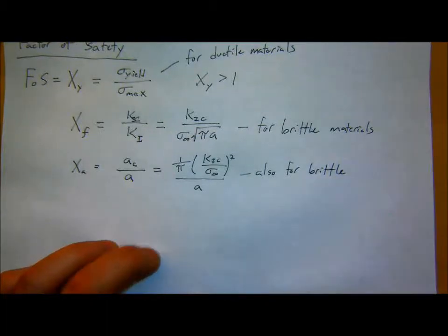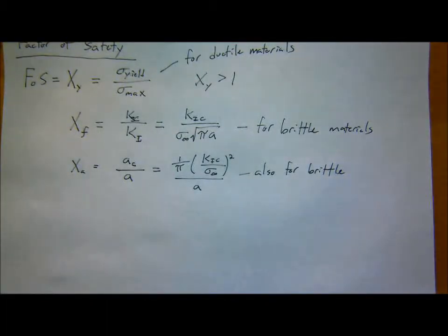I can also define this in terms of maximum flaw size. So a factor of safety for how big of a crack I have. So, some Xa is equal to my a critical over the a. This is for, basically this relationship for my a critical size, my maximum size. Which is then 1 over pi K1C over sigma infinity squared over a. This is also for brittle. Just a slightly different way of quantifying it. Or, kind of, different way of thinking about it. Okay. So, I'm gonna talk a little bit now. I'm gonna try to gauge your intuitive understanding of fracture toughness.